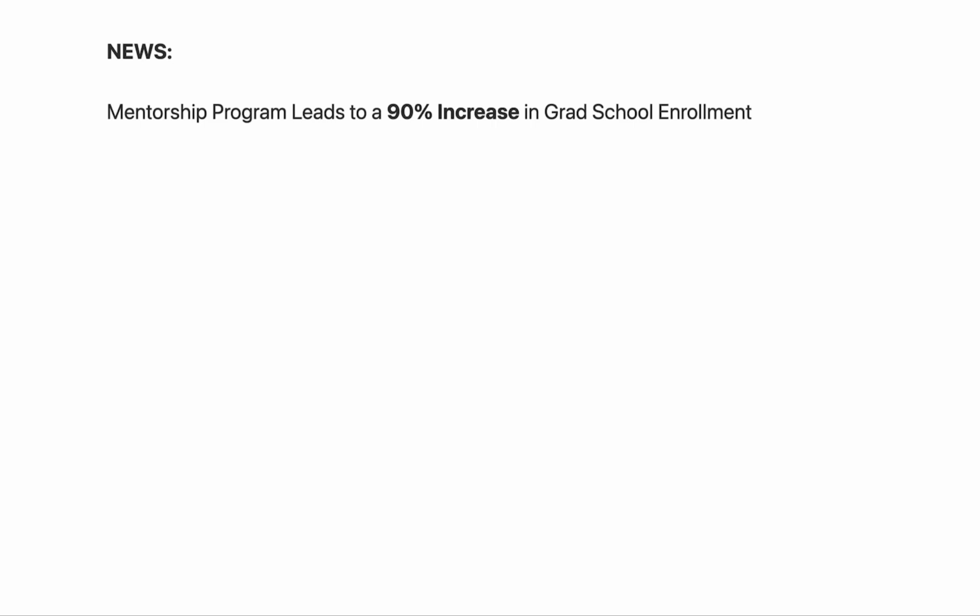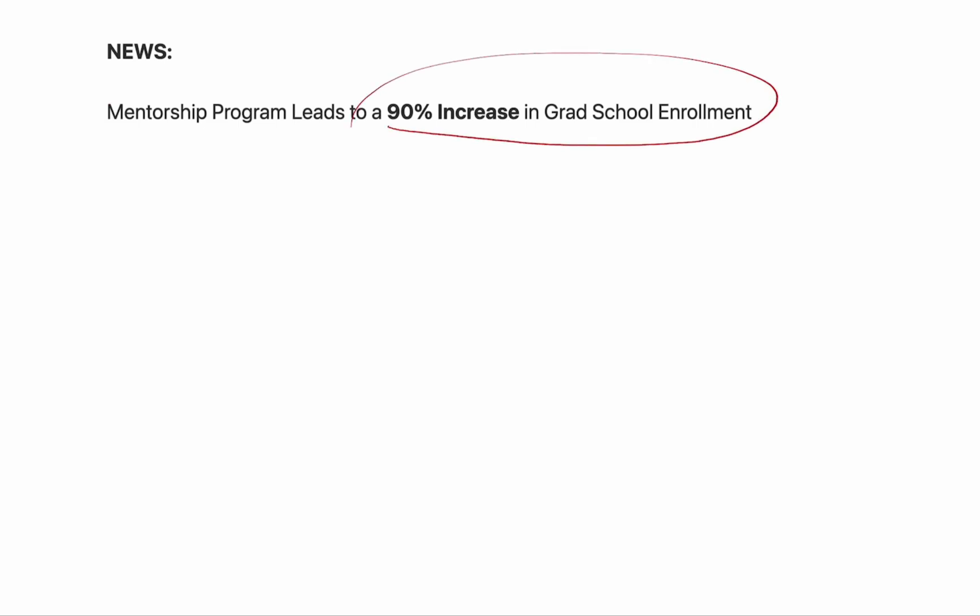Suppose you come across this research study. In this study, they were trying to help college kids go to grad school. What they did was an experiment where half the kids were in a control group where they did nothing with them, and the other half were given a mentorship program. The study reports that the mentorship program led to a 90% increase in grad school enrollment.